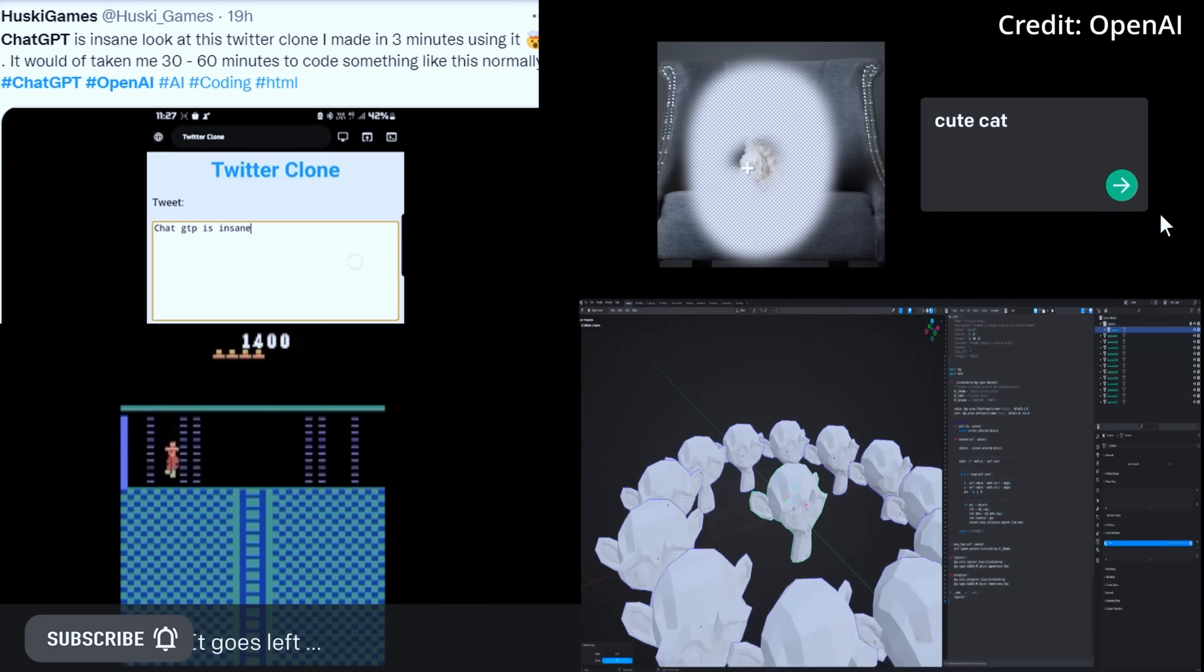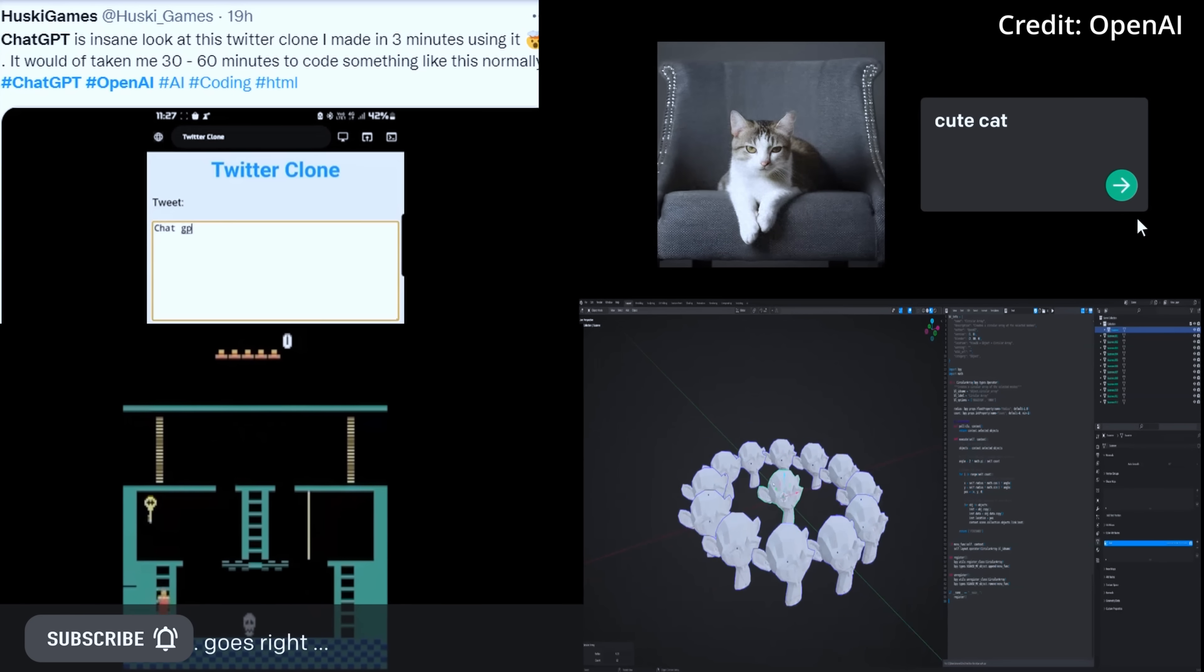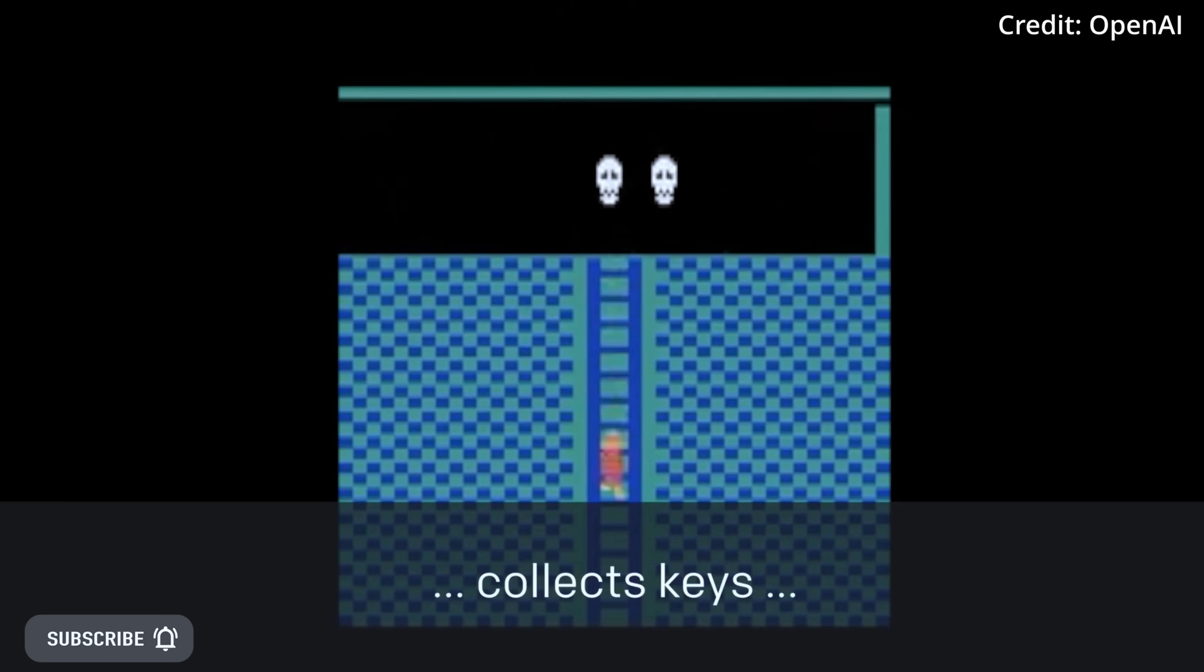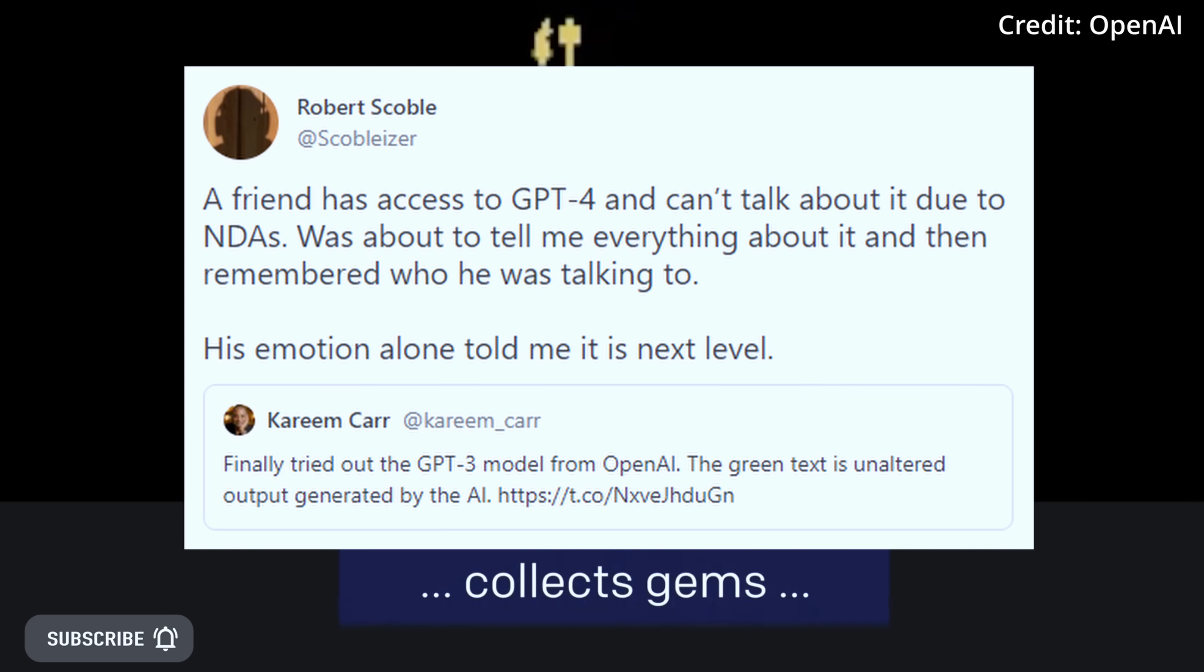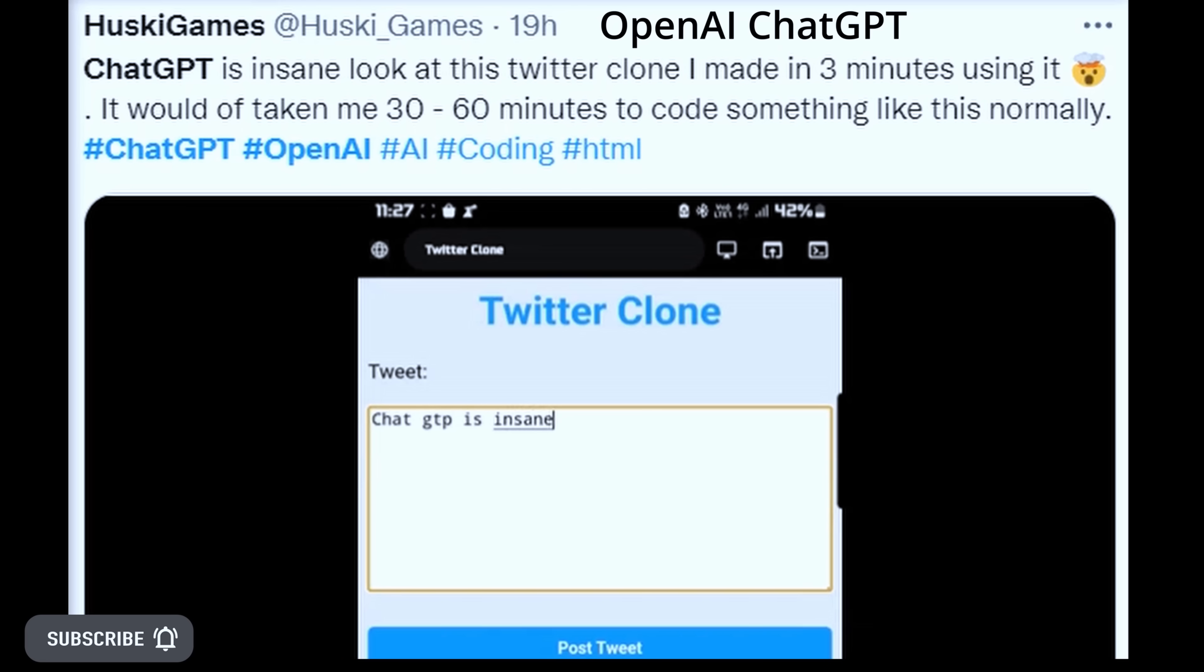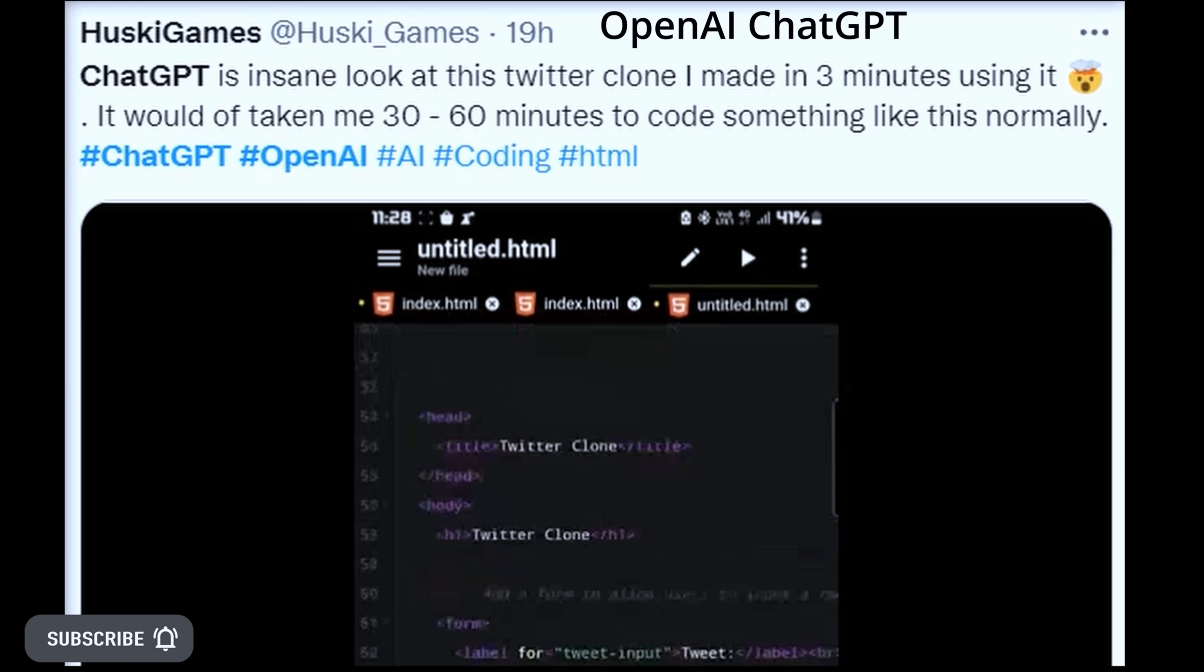From a layman's perspective, this means that the model will be able to keep a larger number of possible next words, next sentences, or next emotions based on the context of the input. In other words, GPT-4 is likely to be more similar to human thinking than GPT-3, as it will be able to consider a wider range of options when generating outputs.